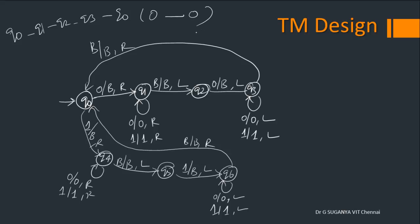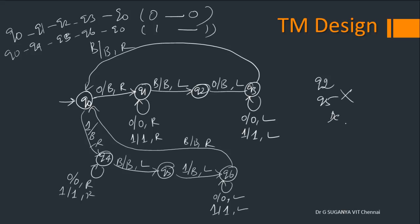Similarly, Q0→Q4→Q5→Q6→Q0 handles matching 1 with 1. When no matching symbol is found — for example, from Q2 or Q5 you see the wrong symbol — you move to a dead state. From Q0, if you see 1 when expecting 0 from Q5 you see 0, move to a dead state. That's it — a very easy way of designing a Turing machine. Stay tuned for more updates.